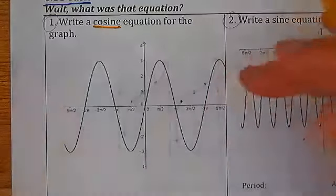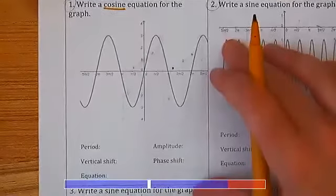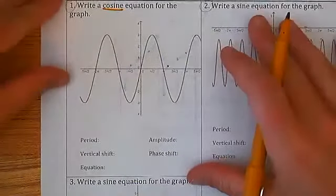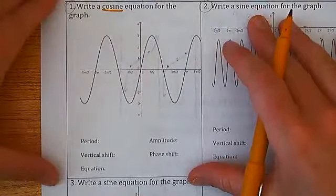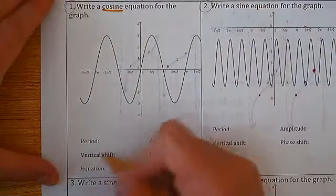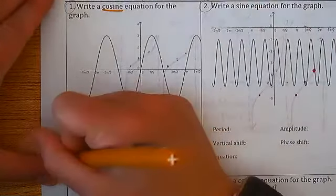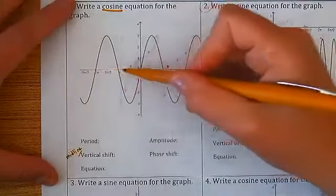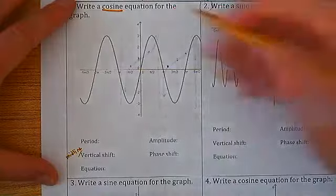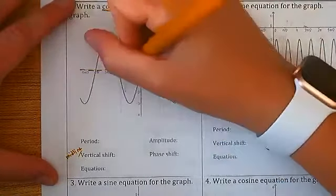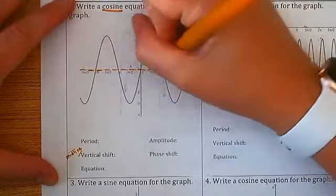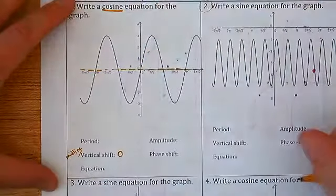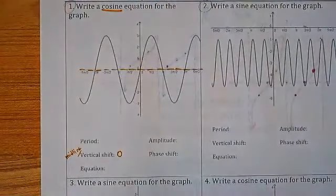Before we get into any of that, let's focus on what we know right away. Just like when I graph, I like to focus on the midline first, which here is written as vertical shift. The midline is whatever cuts through your graph horizontally in half. In this case, the midline is 0.